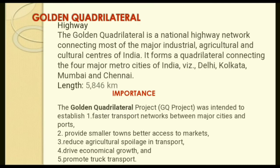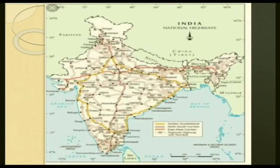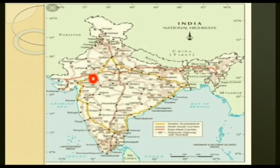Golden Quadrilateral drives economic growth by providing employment. It promotes truck transport — large transport vehicles carrying huge quantities of goods or raw material — making it the fastest method of transportation across the country. The yellow line in the map joins the four metropolitan cities: Delhi, Mumbai, Chennai, and Kolkata. The red line running from Srinagar to Kanyakumari is the North-South Corridor, and from Silchar to Porbandar is the East-West Corridor.